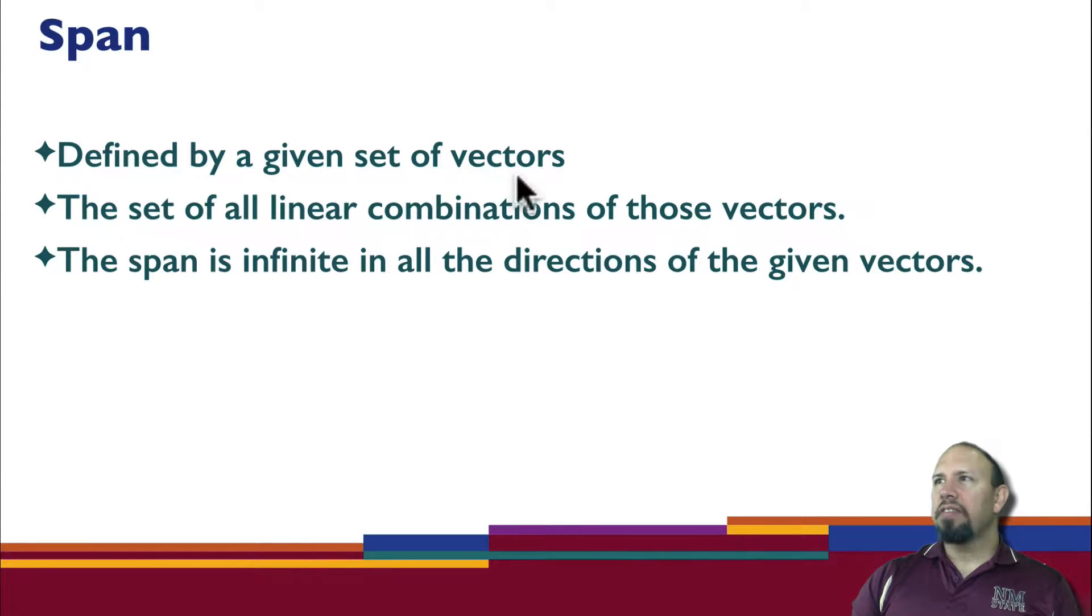It's defined by the set of given vectors. The set of all linear combinations of those vectors is the span. The span is infinite in all the directions of the given vectors. That is the definition of span. We're going to be using this concept quite a bit - it's the set of all linear combinations of a set of vectors.